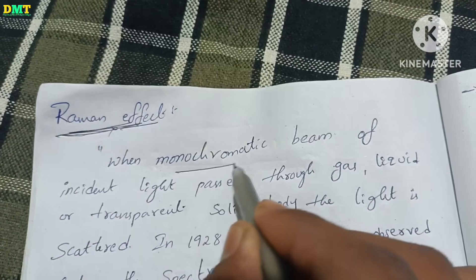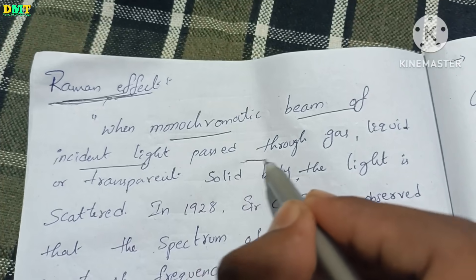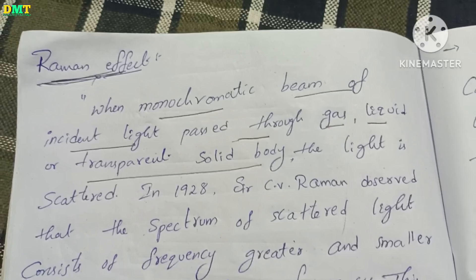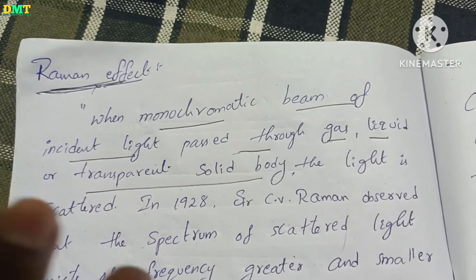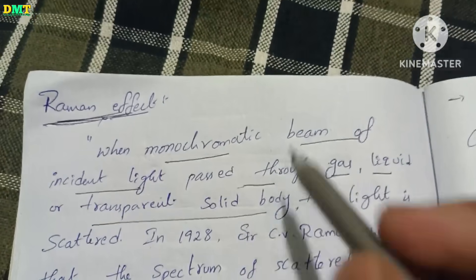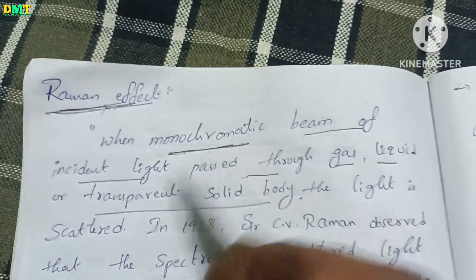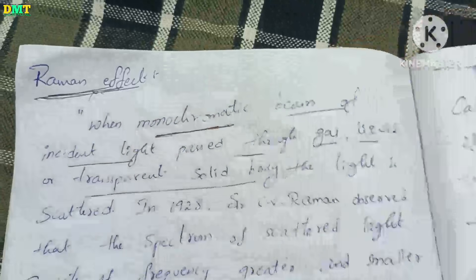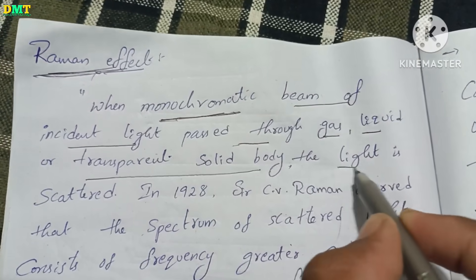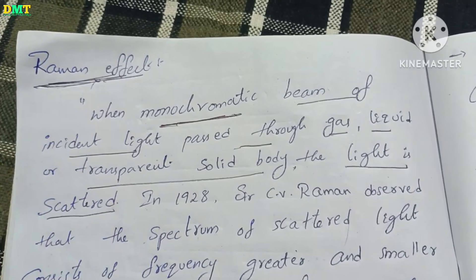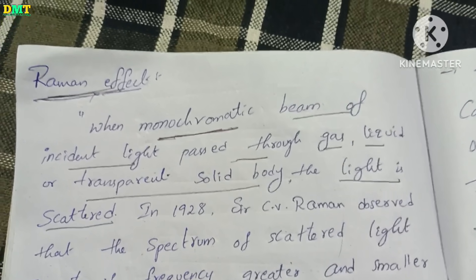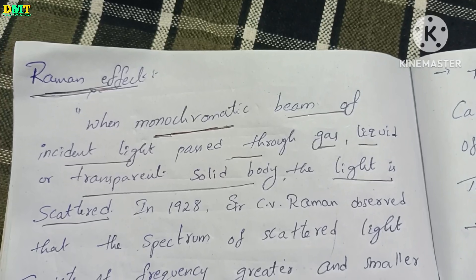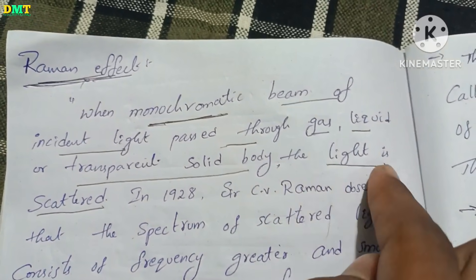When a monochromatic beam of incident light passes through a gas, liquid, and transparent solid body, you will observe the Raman effect.